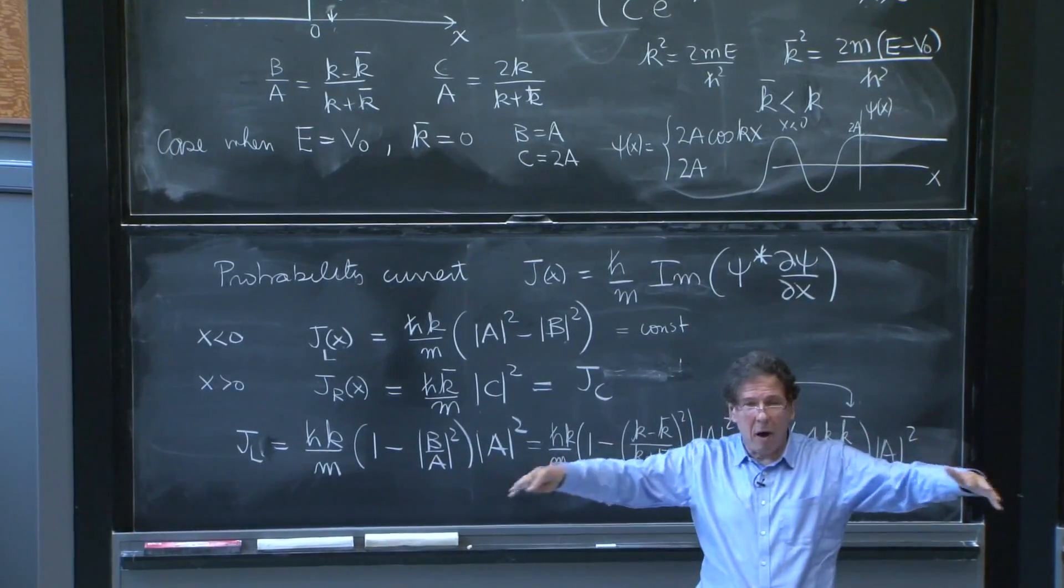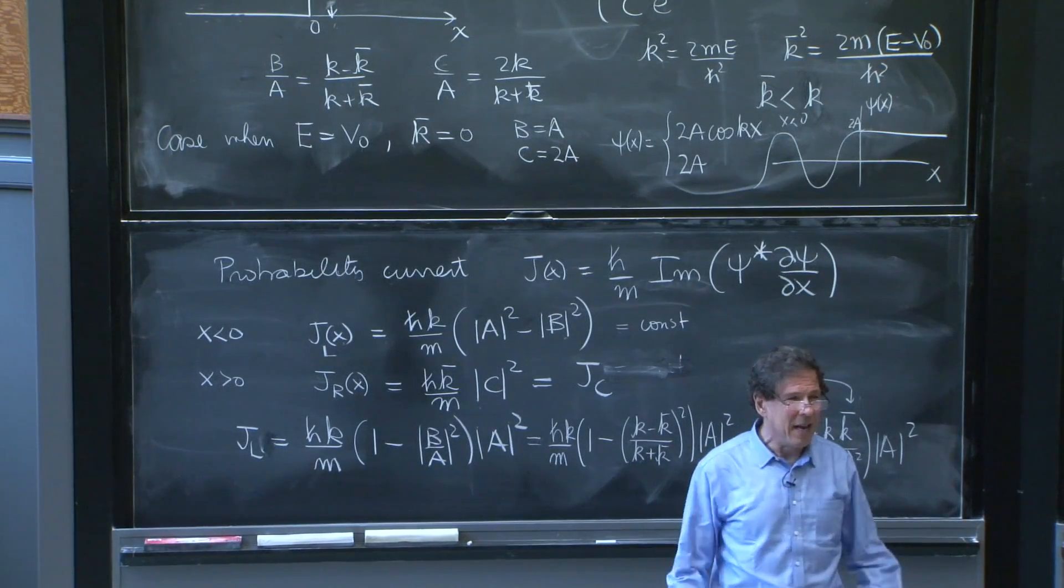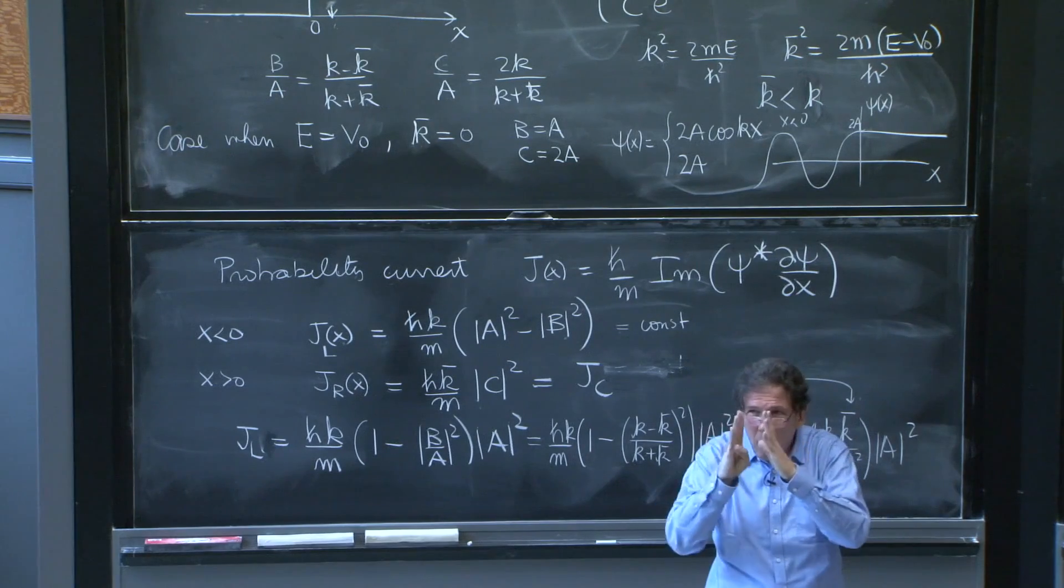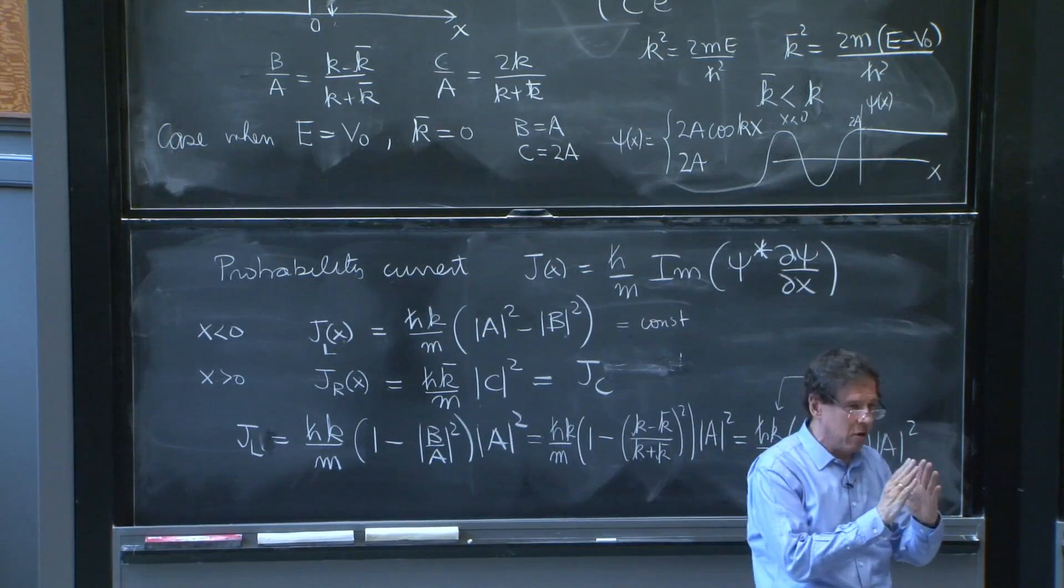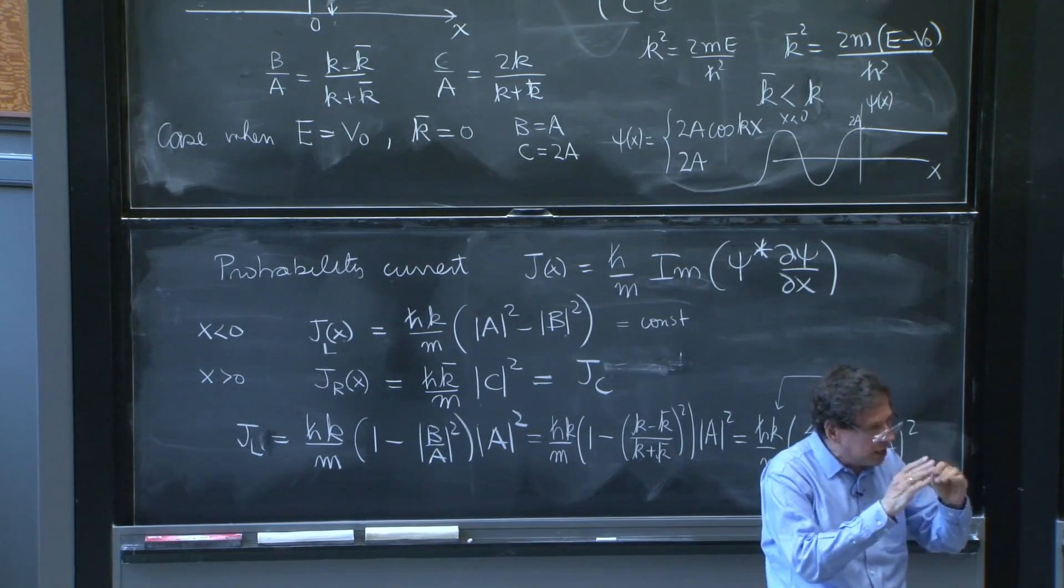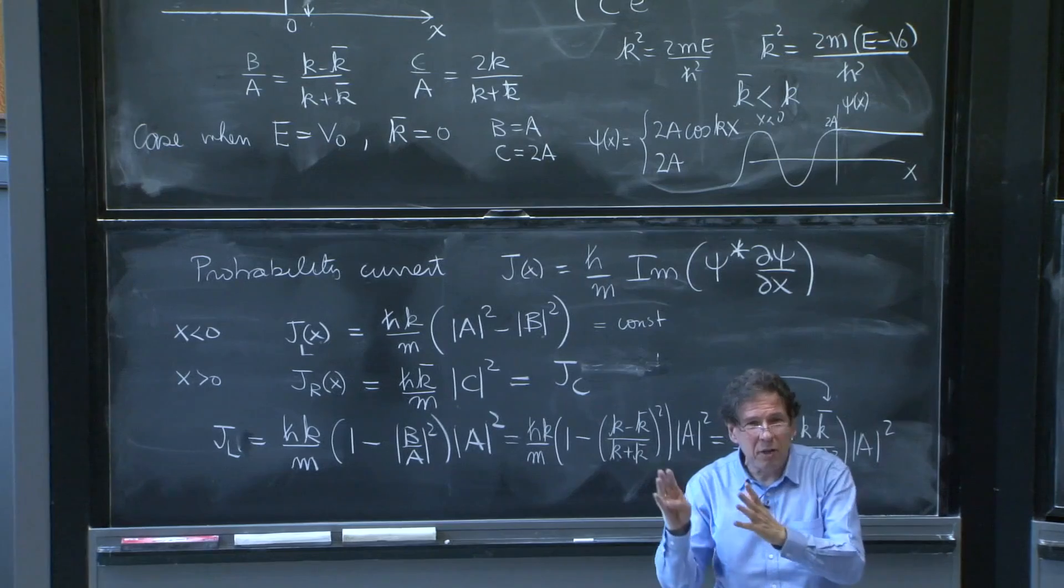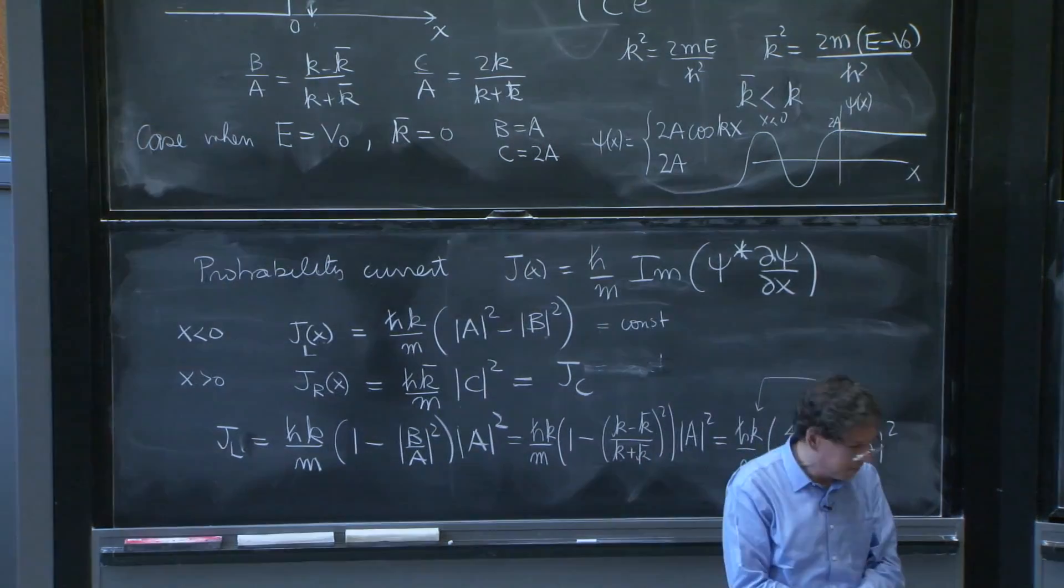If your wave packet is very broad over energies, well, then it's a more complicated thing. But as long as the wave packet is such that it basically has one narrow band of energies, the reflection coefficient associated to this calculation is the reflection coefficient or reflection probability for the wave packet that you're sending in.